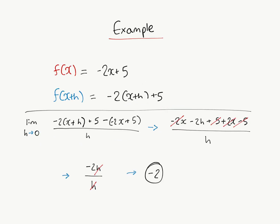Our example is f of x equals negative 2x plus 5. So first we have to find f of x plus h, which equals negative 2 times x plus h plus 5.